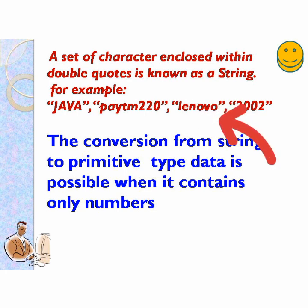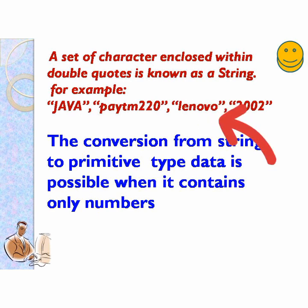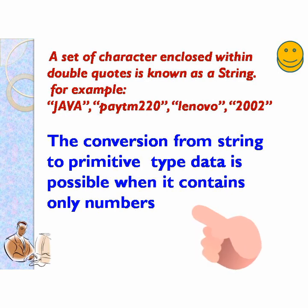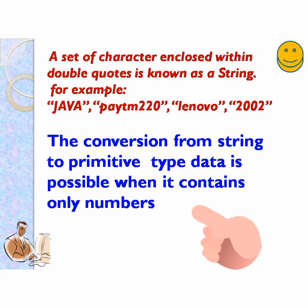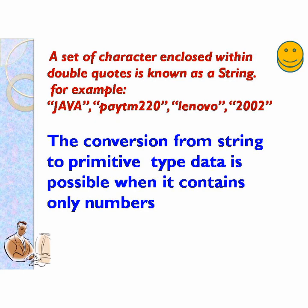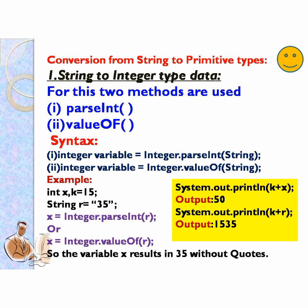A string is a set of characters enclosed within double quotes — for example, "Java", "ATM220", "Lenovo", "2002". You have to remember: conversion from string to primitive type is only possible when the string contains only numbers. You cannot convert a string containing characters like "Java" to a primitive type — you will get an error.